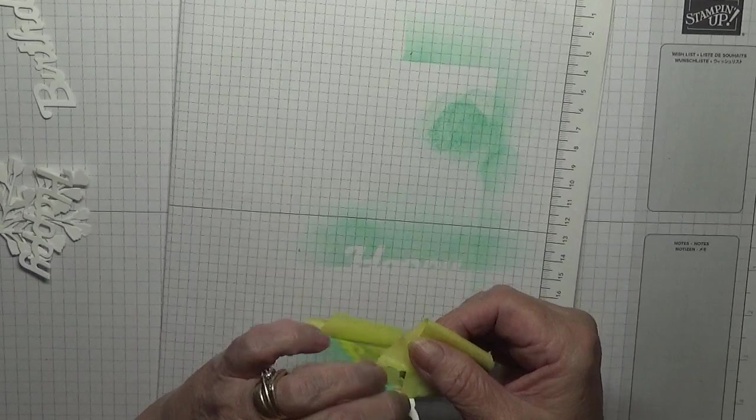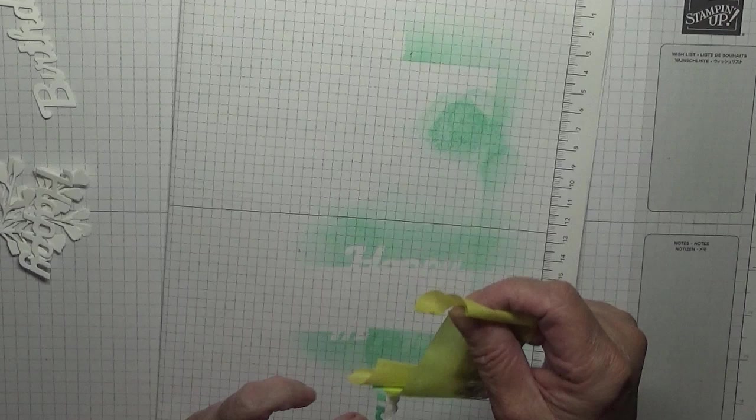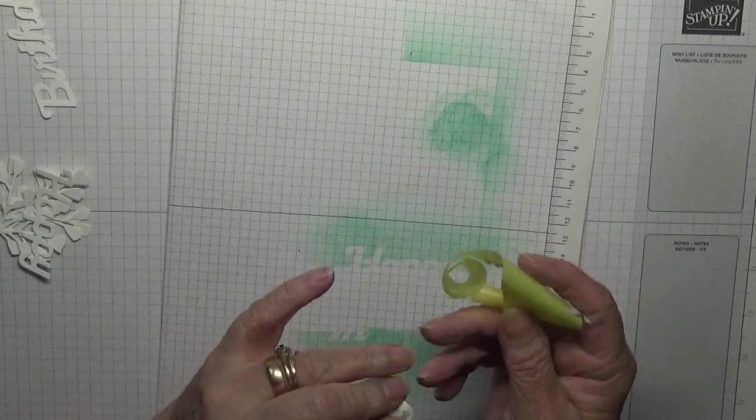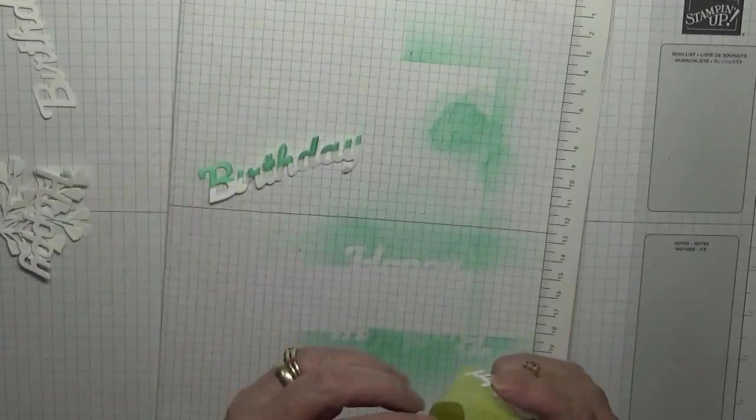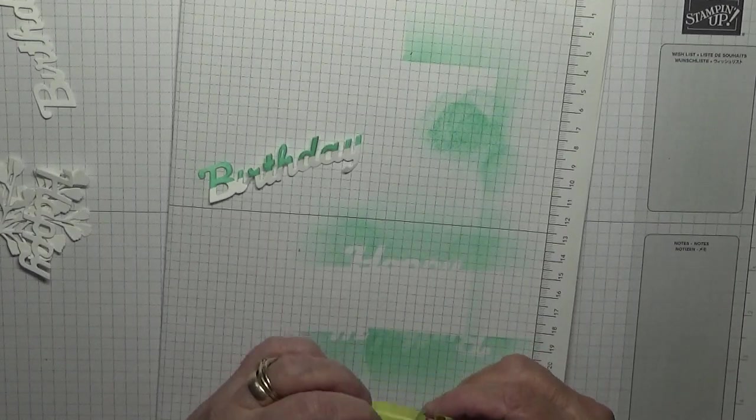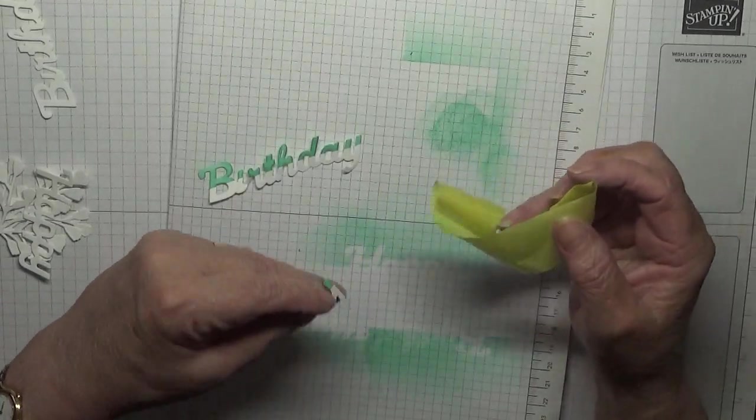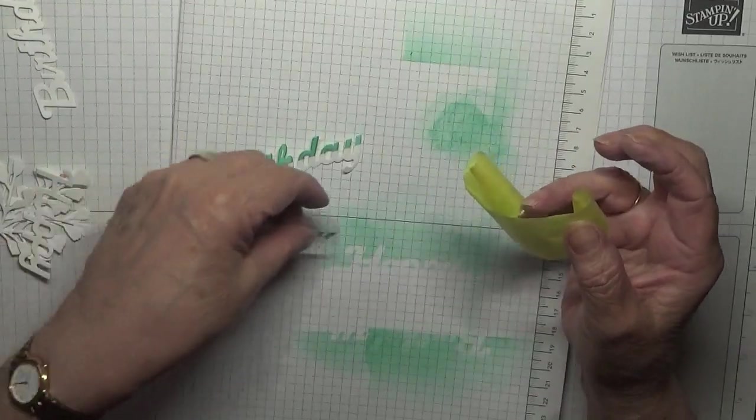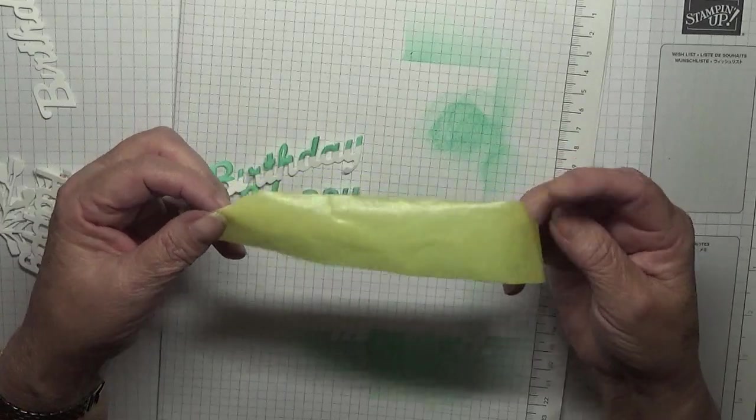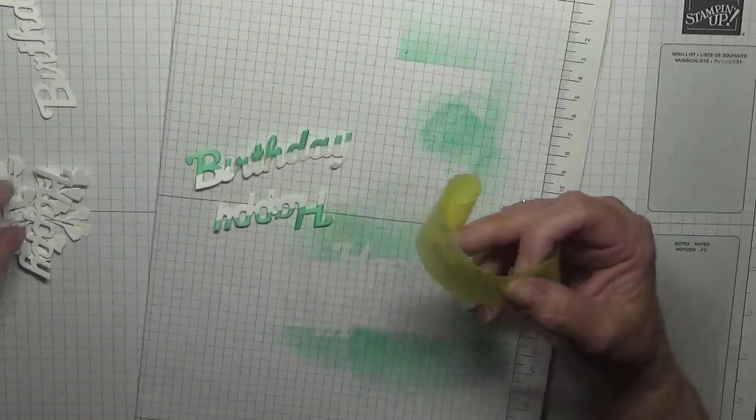Peel it off gently. Big off the word happy, gently. Looks like I have lost a bit of my Y. Sorry, right.